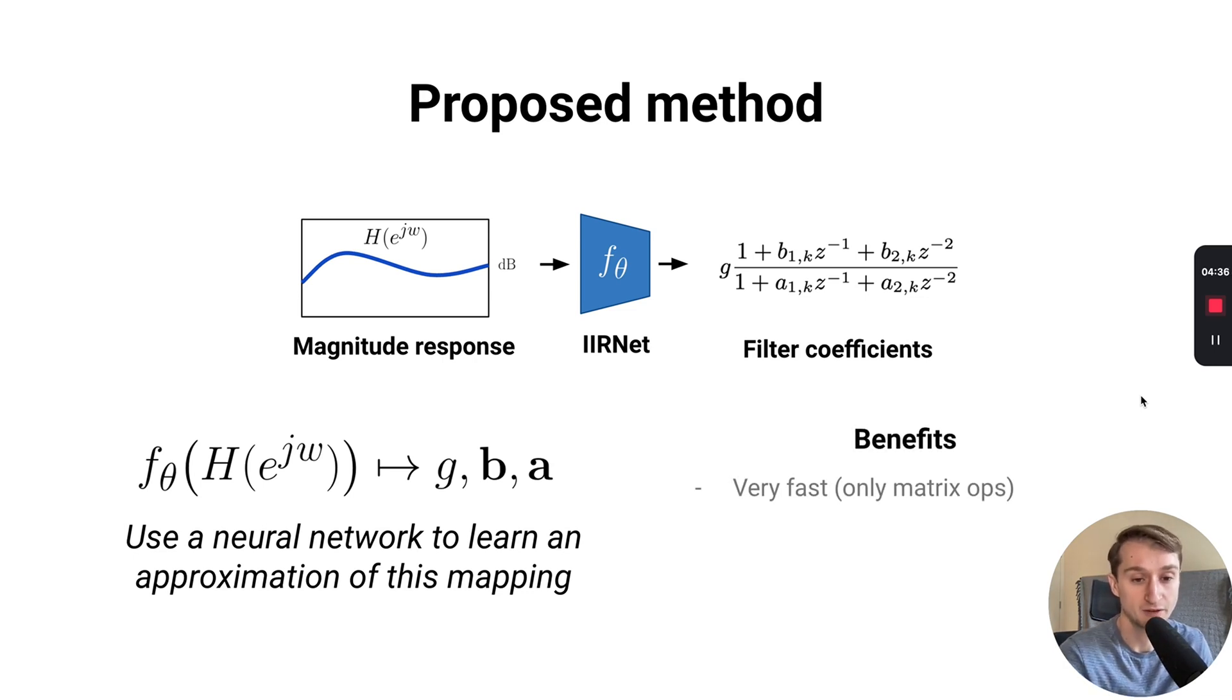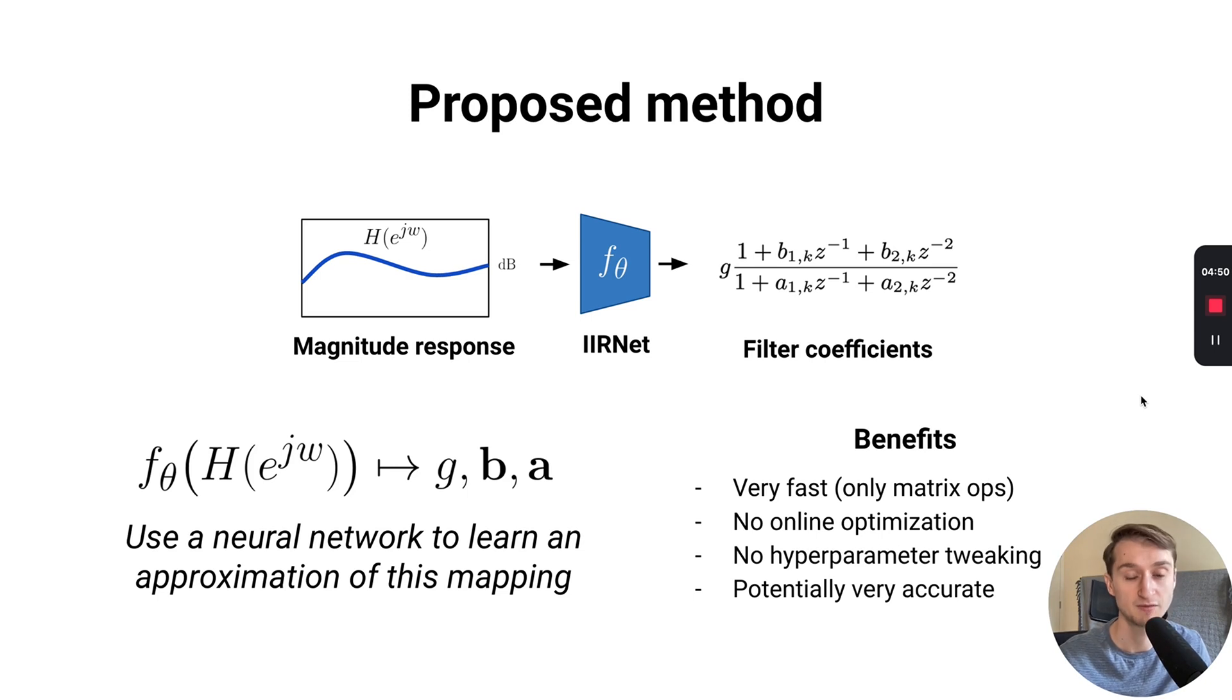We can view this as using a neural network to learn this mapping from the magnitude domain to the filter coefficient domain. This provides a number of unique benefits. For example, it can be very fast since our approach just uses a forward pass with some matrix operations, no online optimization after training during inference, and there's no hyperparameter tweaking. We potentially can be very accurate given a big enough model and trained for long enough. This sets us up very nicely to potentially provide a deep learning approach for this problem.